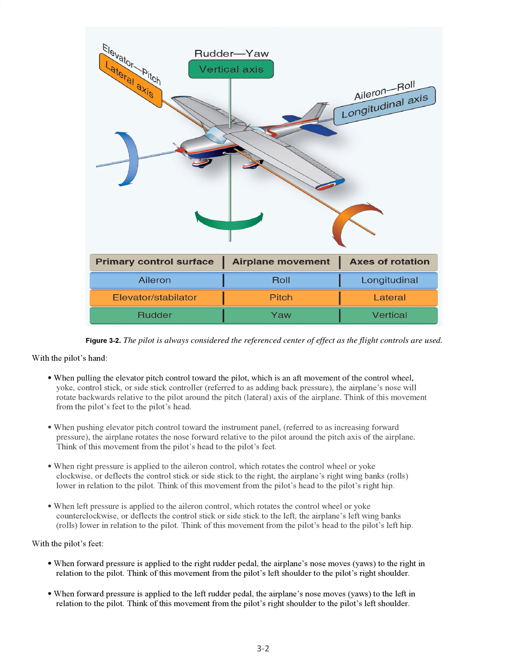When right pressure is applied to the aileron control — which rotates the control wheel or yoke clockwise, or deflects the control stick or side stick to the right — the airplane's right wing banks (rolls) lower in relation to the pilot. Think of this movement from the pilot's head to the pilot's right hip. When left pressure is applied to the aileron control — which rotates the control wheel or yoke counterclockwise, or deflects the control stick or side stick to the left — the airplane's left wing banks (rolls) lower in relation to the pilot. Think of this movement from the pilot's head to the pilot's left hip.